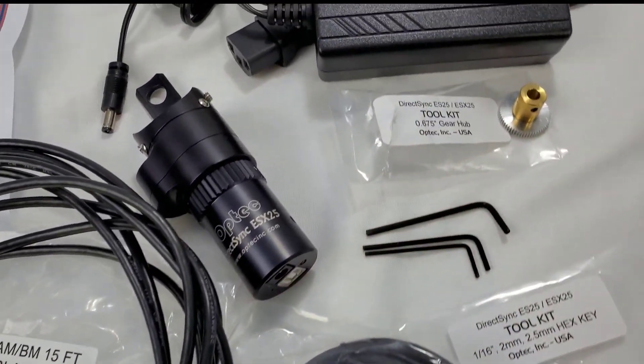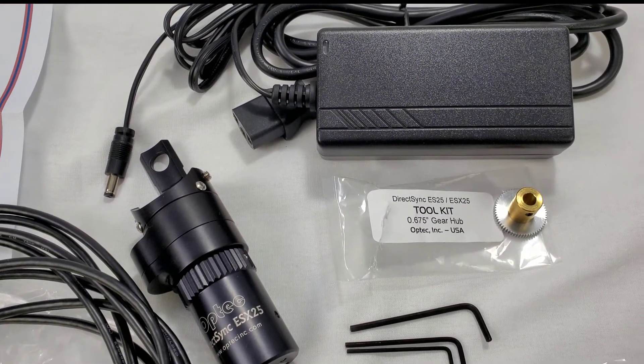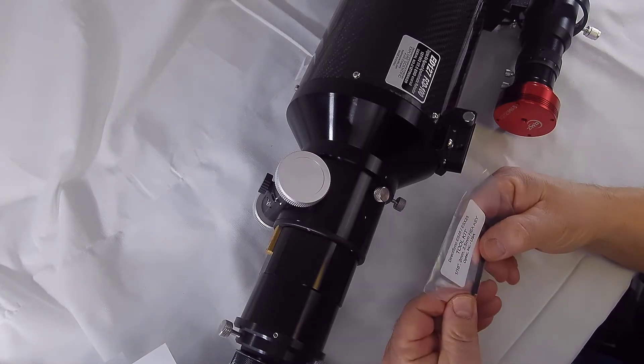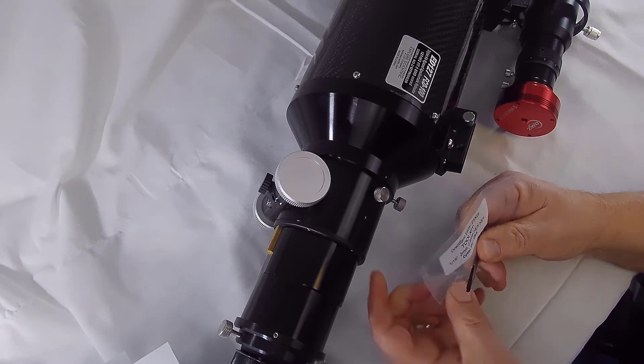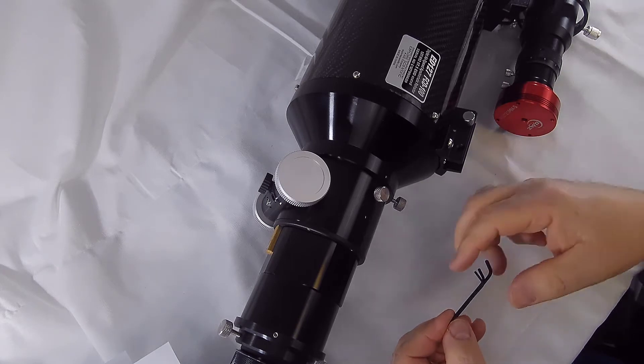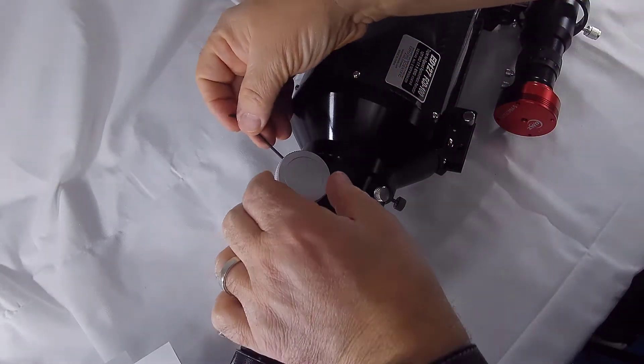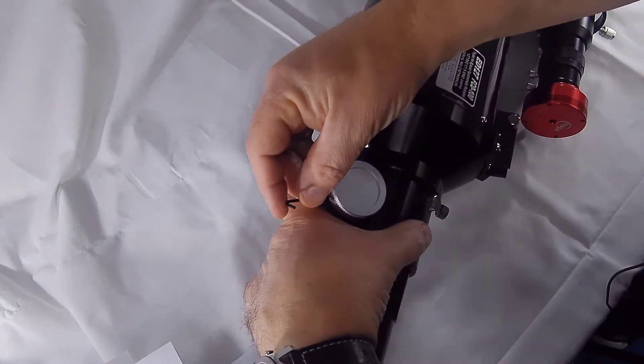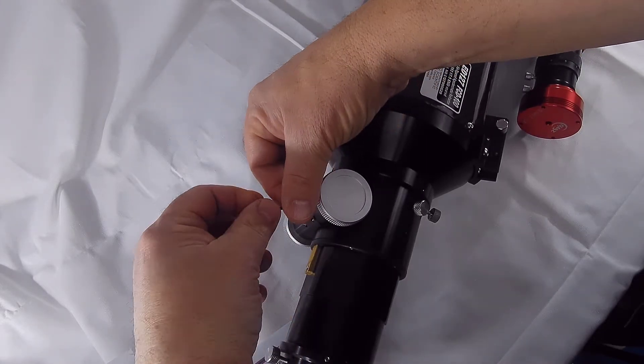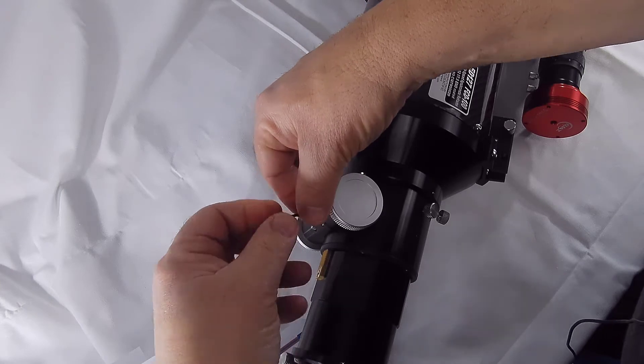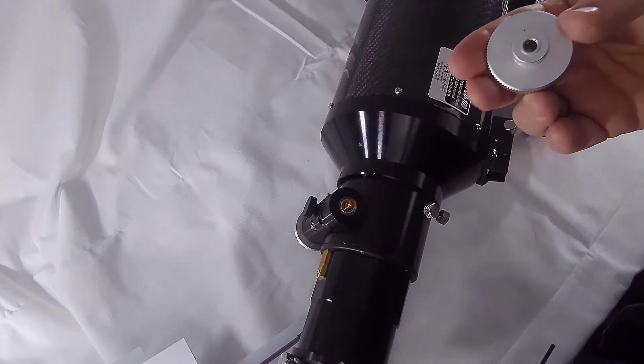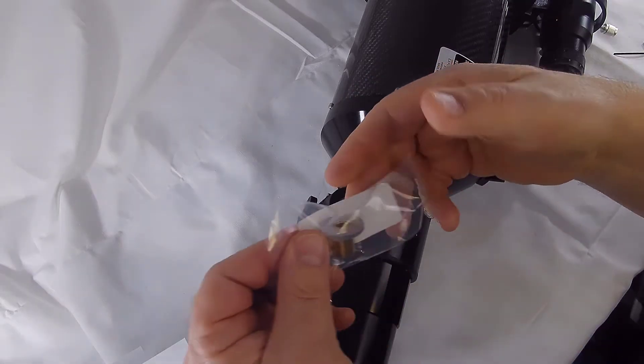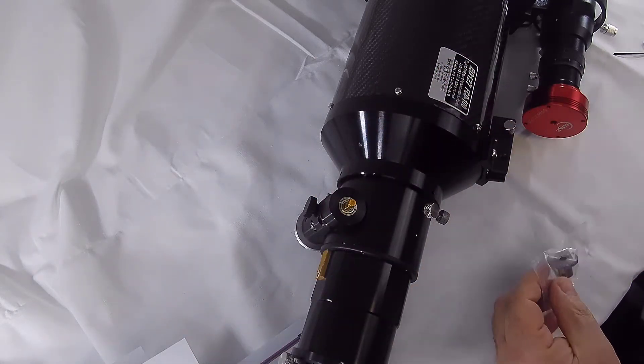Alright, so to add this we're going to take the included allen wrenches. There's three different ones for removing the coarse focus knob, adding the gear, and then the third will be the set screws to mount the focus motor. So the first thing I'm going to do here is remove the coarse knob off the focuser. That's just one allen wrench, just a quick couple of turns and that should just slip right on off. Here you're gonna see the exposed shaft where we're gonna add the gear.